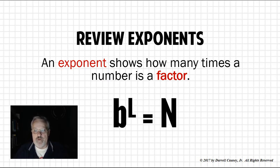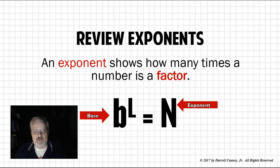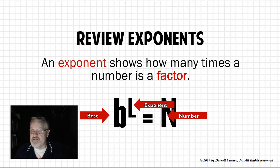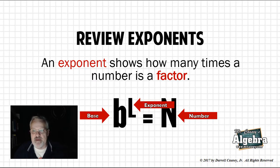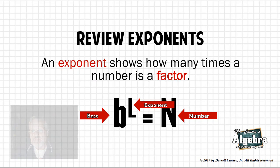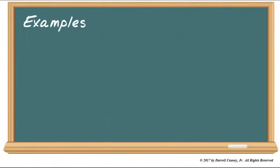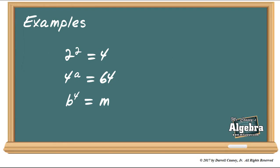Here we go. We have b to the l equals n. Well, b is the base, l is the exponent, and n is the number. That's exponents. If you don't understand exponents, go work on your exponents, then come back and do logarithms. Let's look at some examples: 2 to the second power equals 4; 4 to the a power is 64; and b to the fourth equals m. Notice that exponents can be variables just like anything else.